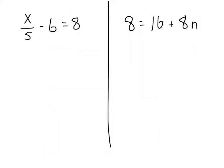Now we have two more multi-step equations. The first one: x divided by 5 minus 6 is equal to 8. The very first thing we do is move the number not connected to the variable, which is 6. Since we have minus 6, we add 6 to both sides. The minus 6 and plus 6 cross out, leaving x divided by 5 on the left. On the right, 8 plus 6 is 14.